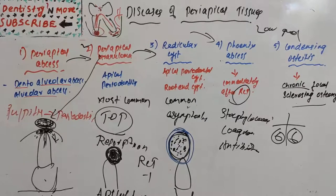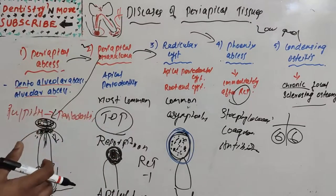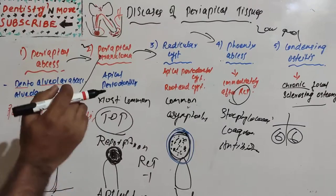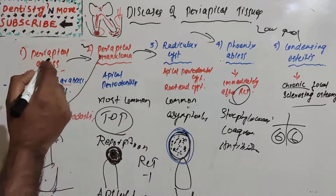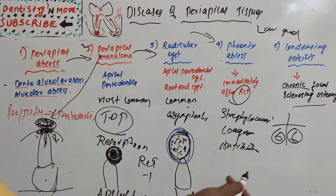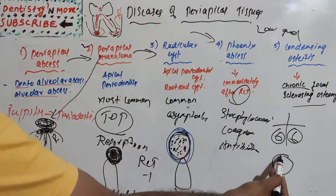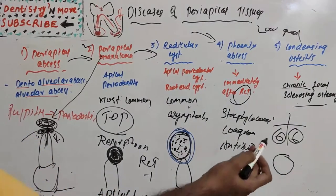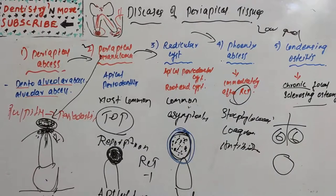It is associated with non-vital teeth or teeth undergoing degeneration. The tooth is definitely asymptomatic, though in very rare cases pain or tenderness on percussion and palpation may be present. Radiographic features: there will be a well-circumscribed radio-opaque mass of sclerotic bone surrounding the area — radio-opaque, not radiolucent — which extends below the apex of one or more roots of the mandibular molar.